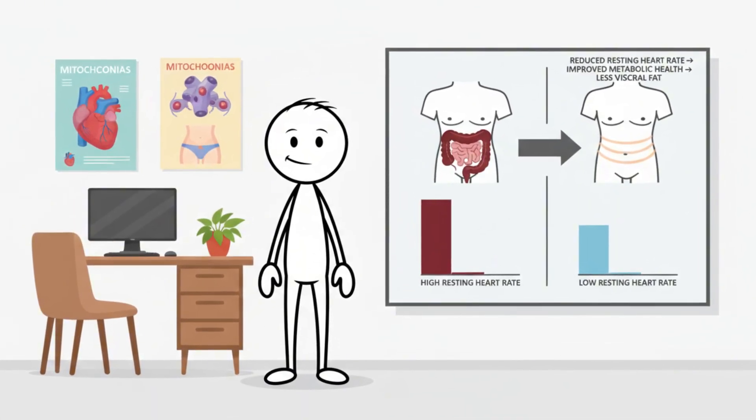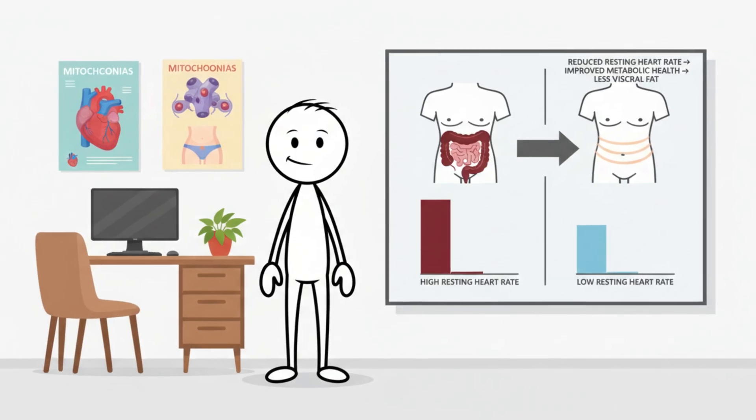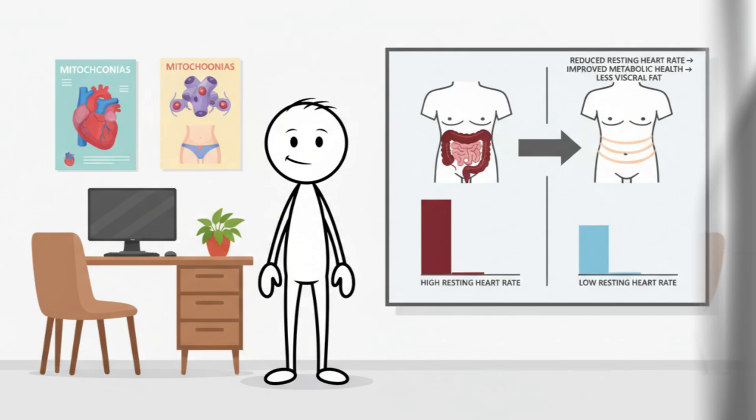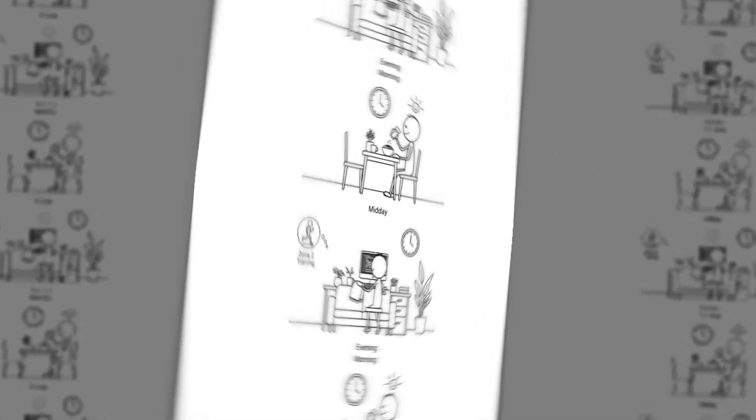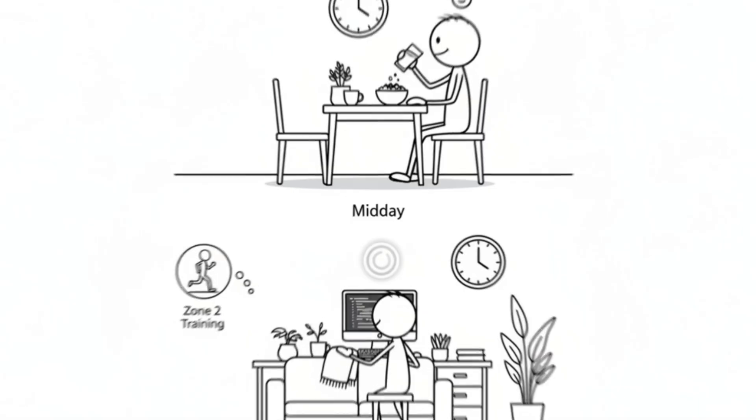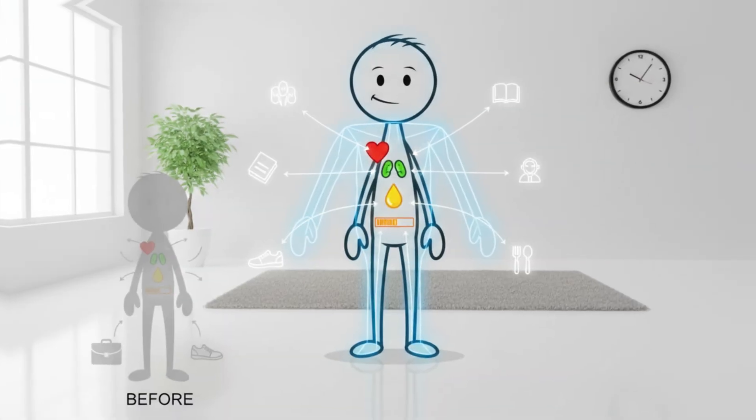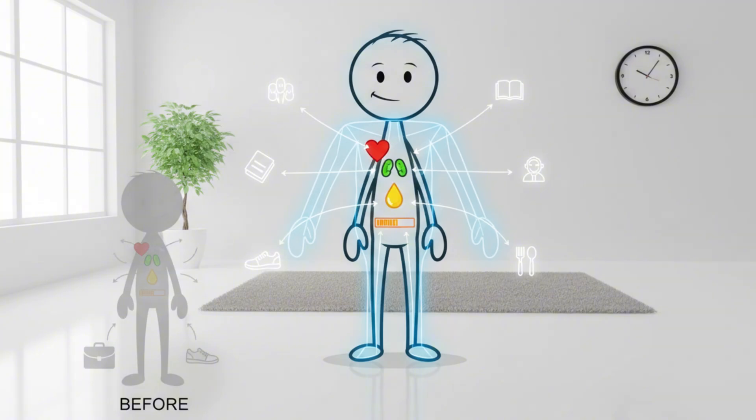And finally, pay attention to how your energy feels throughout the day. People who consistently train in zone 2 often report more stable energy levels because the body becomes better at using fat for fuel. It's a subtle but meaningful sign that your internal physiology is shifting in the right direction.